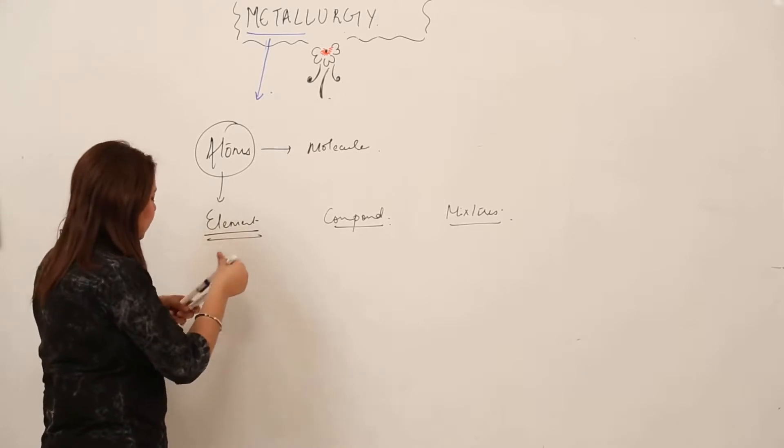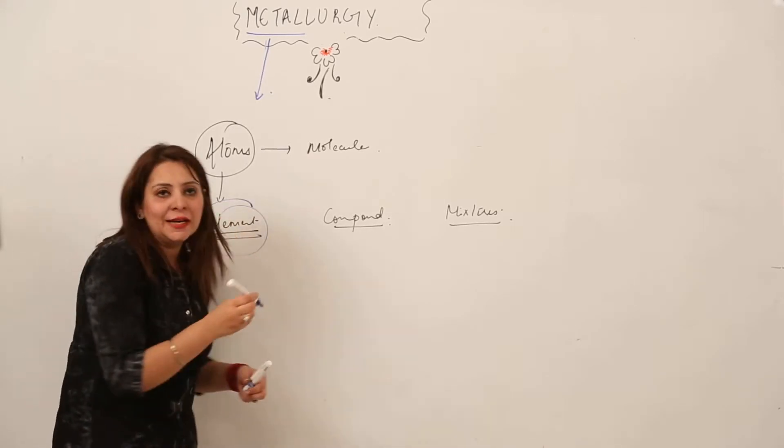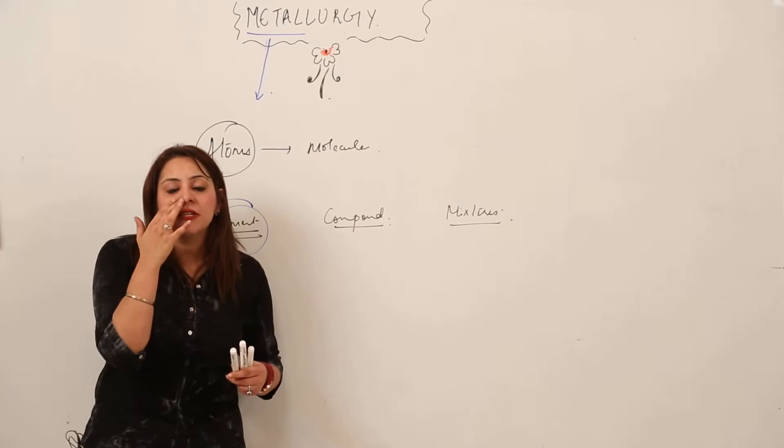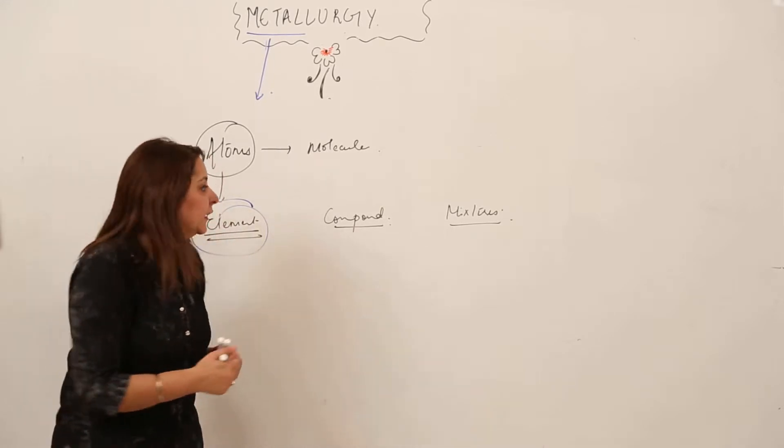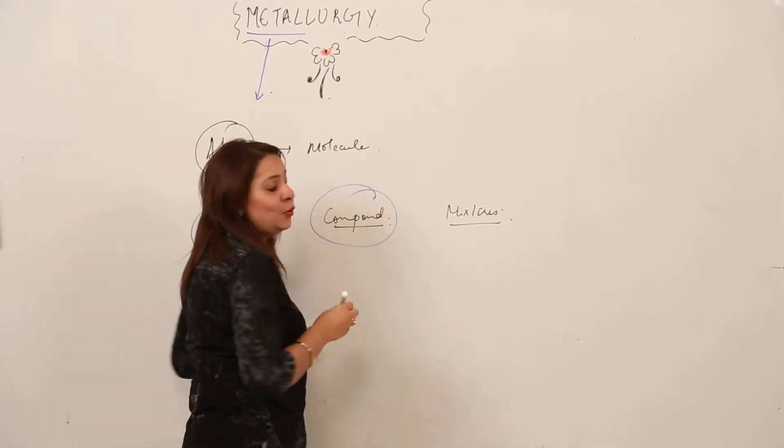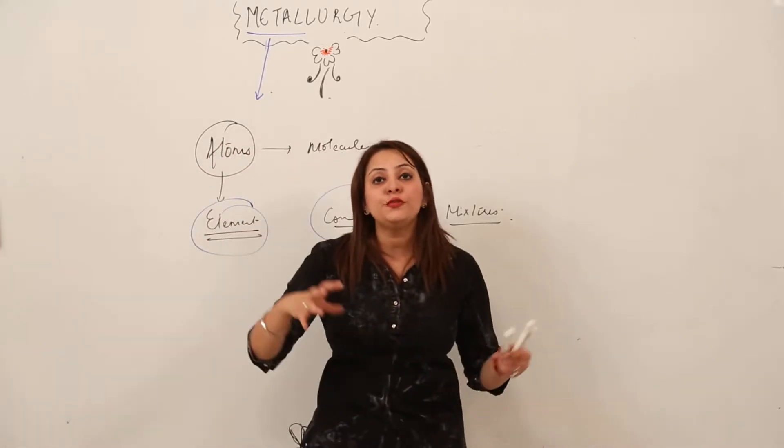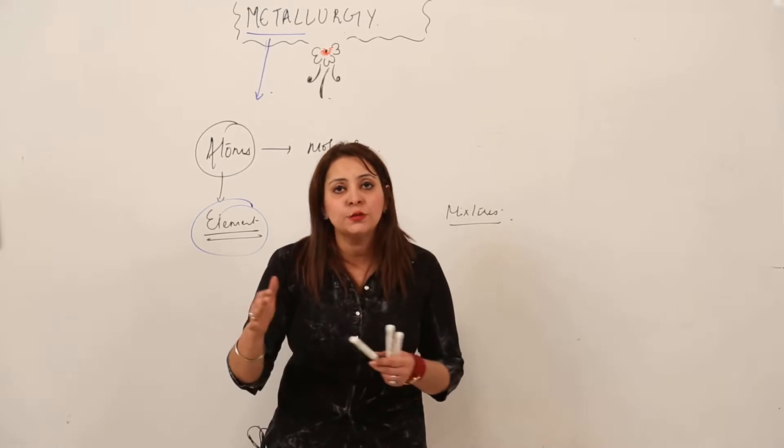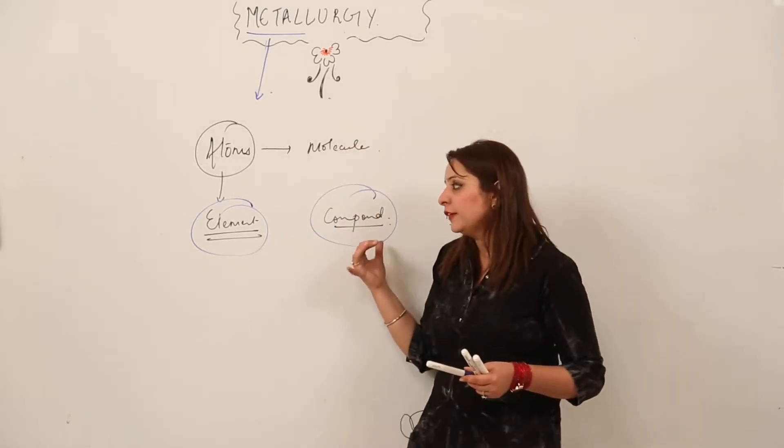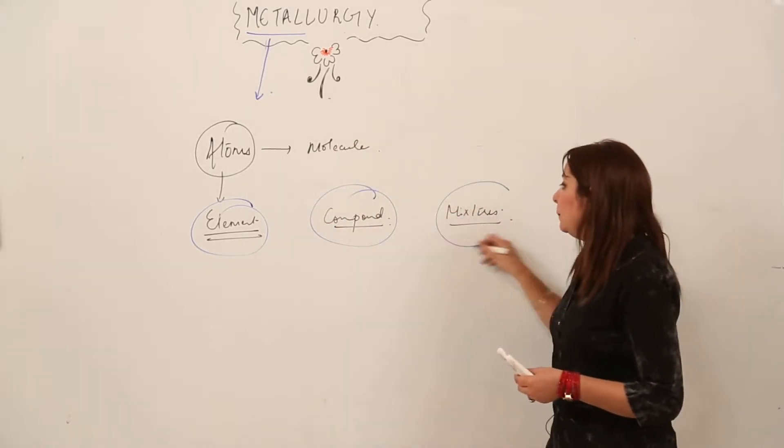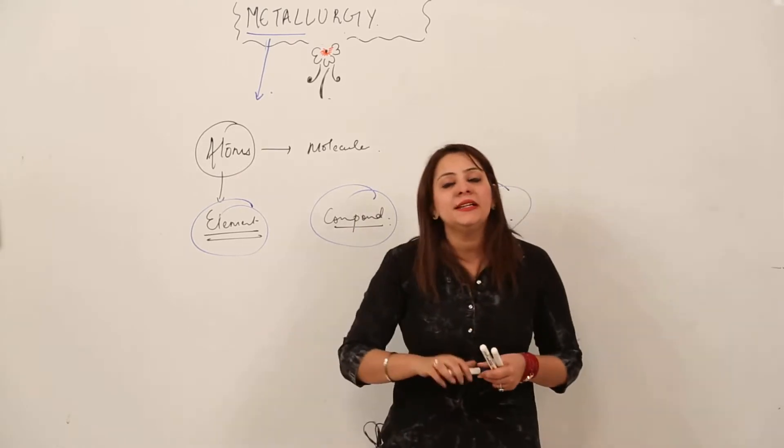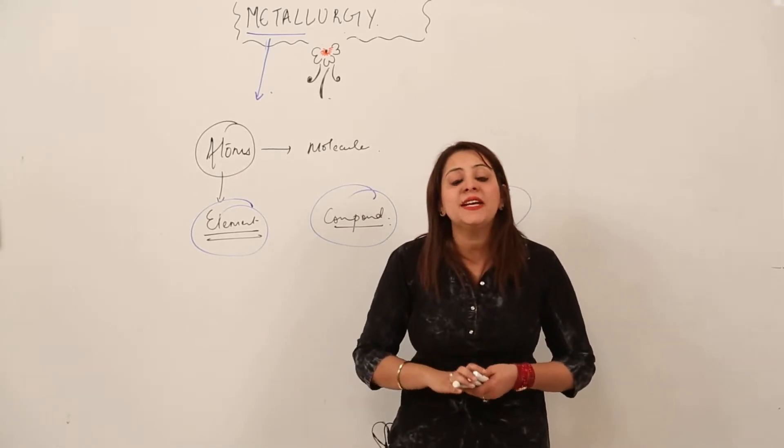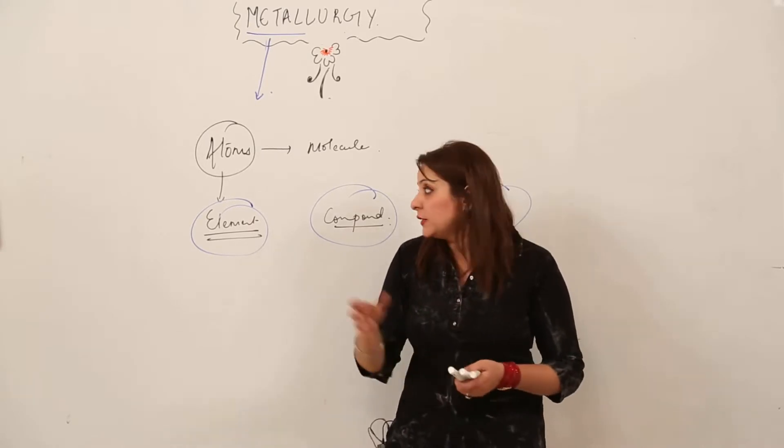The element is a substance which can't be further subdivided. When we talk about compound, it is formed when two or more atoms of different elements combine in a fixed whole number ratio and volume. Mixture is when two or more substances are mixed in any ratio, not chemically combined.